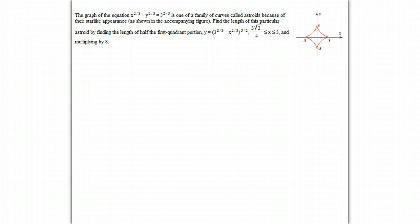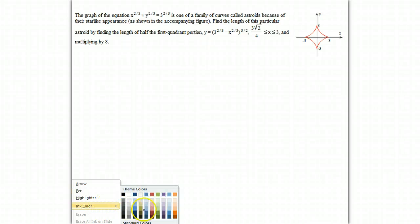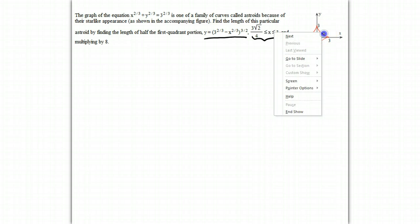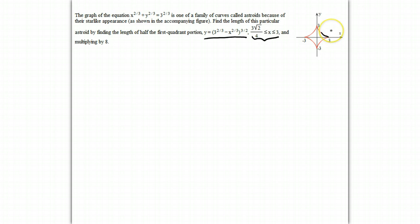The astroid problem involves the curve (3^(2/3) - x^(2/3))^(3/2) on the interval from 3√2/4 to 3. We'll be finding the arc length of this part, and there are eight identical parts that make up the whole curve, so we have to multiply by eight. The arc length formula is the integral from a to b of the square root of 1 plus f'(x)² dx.